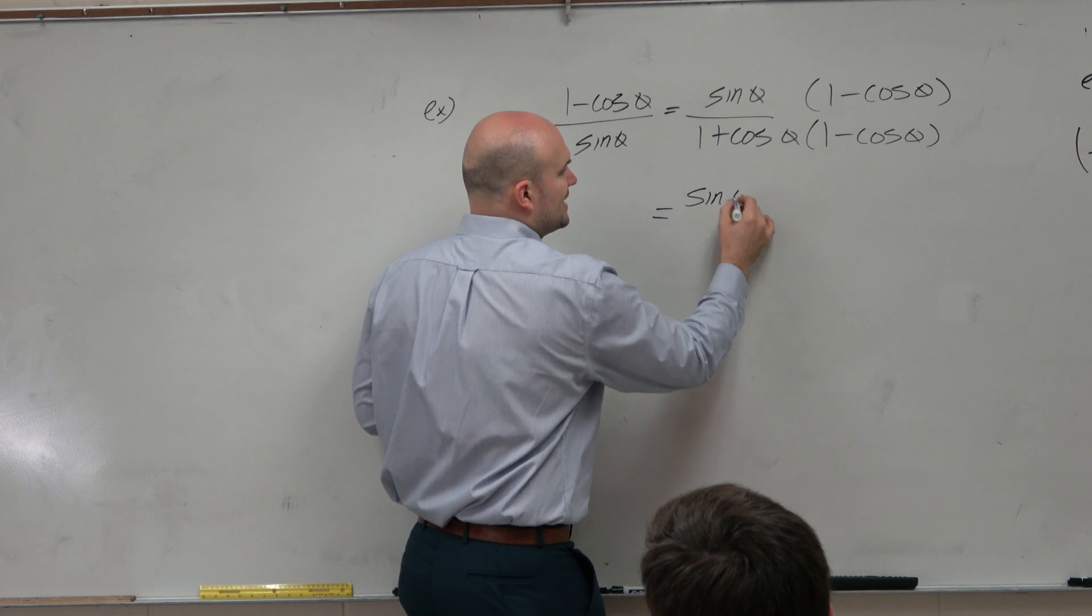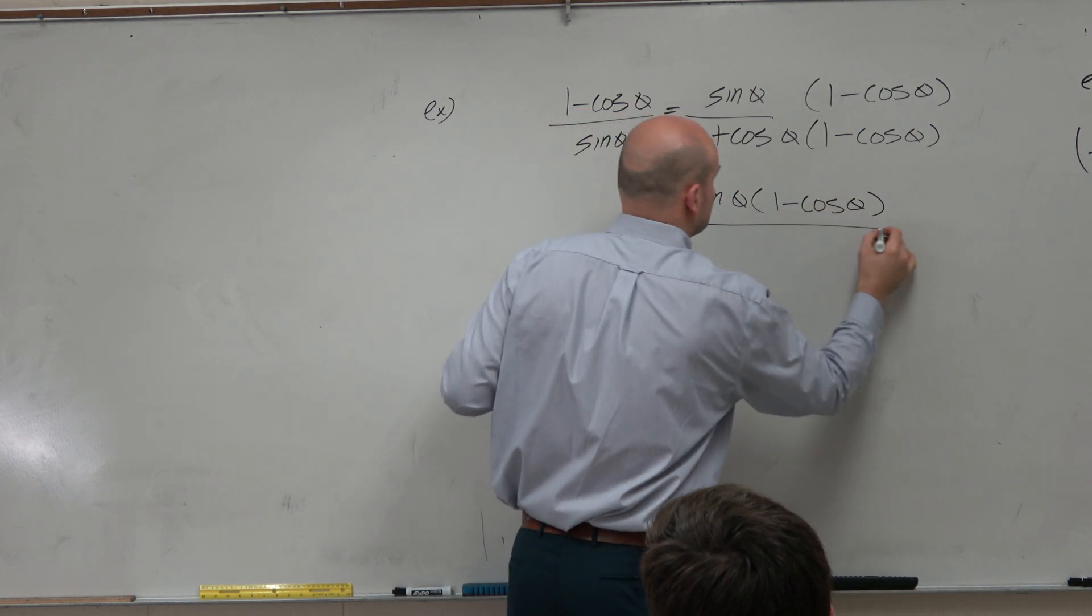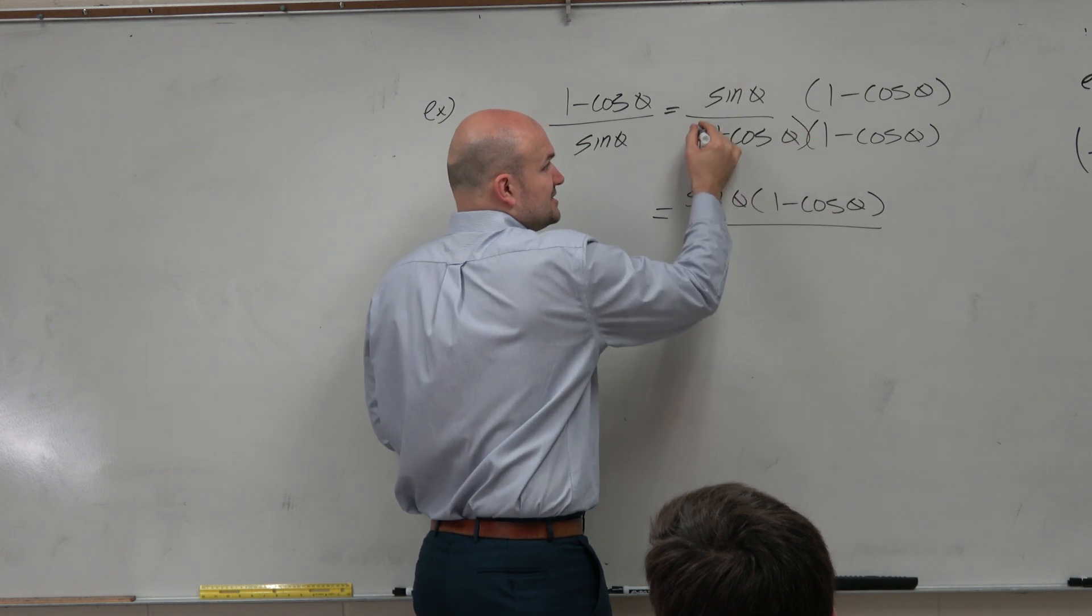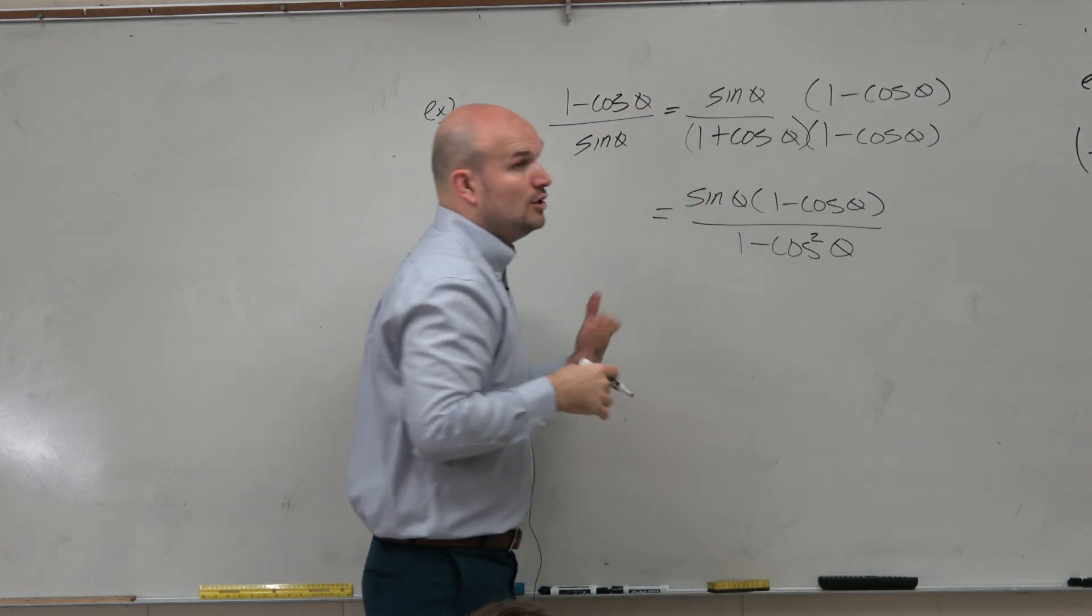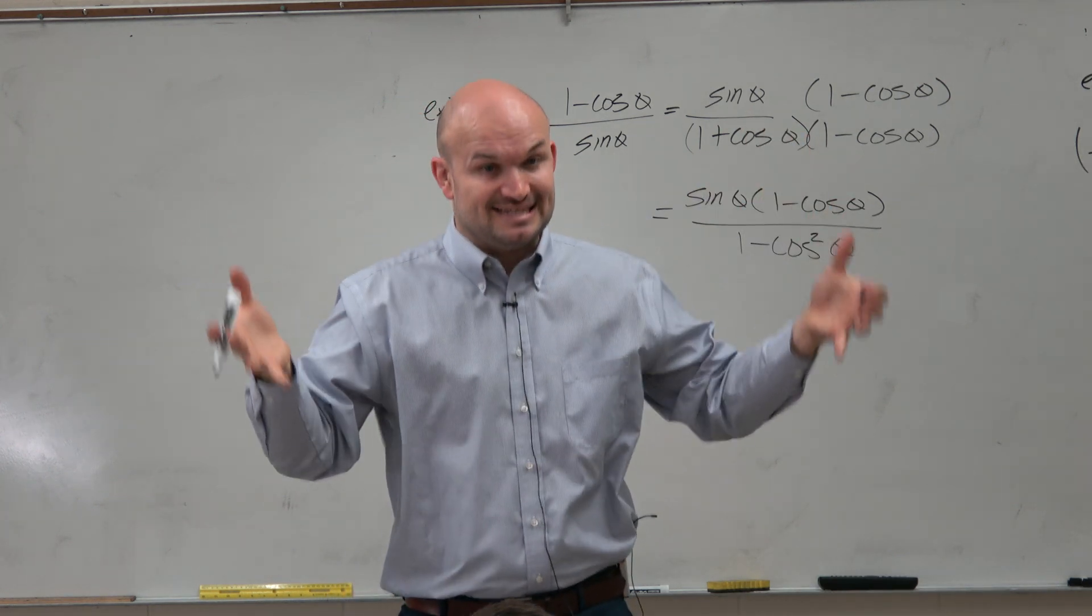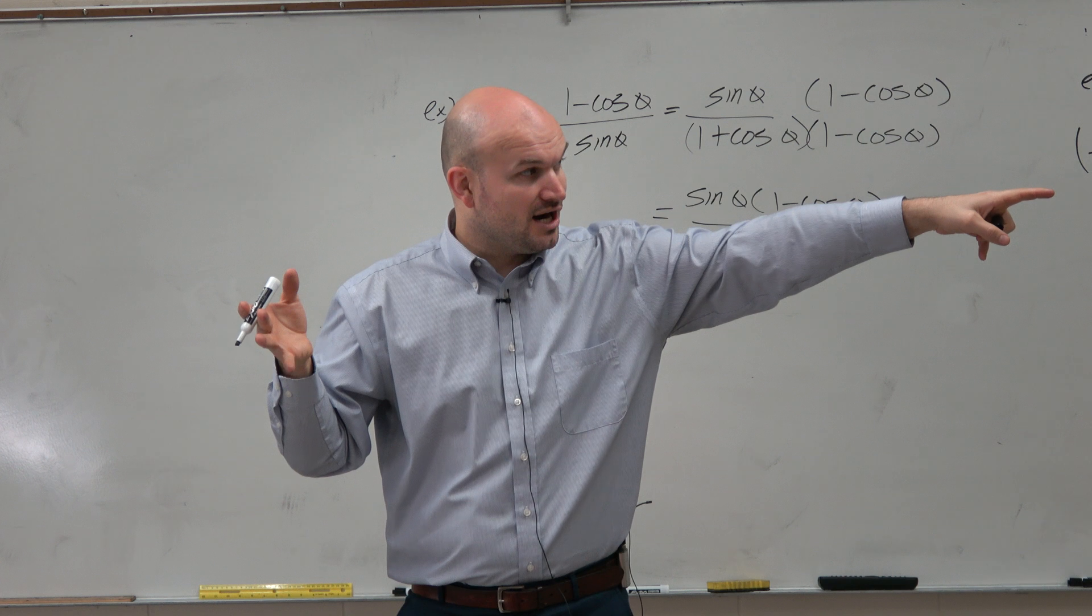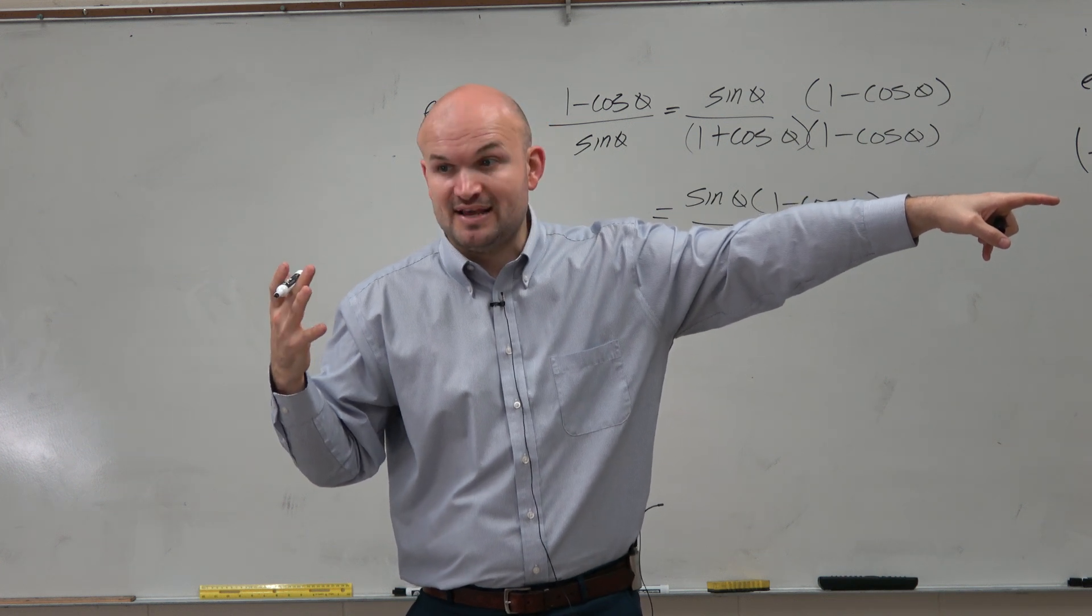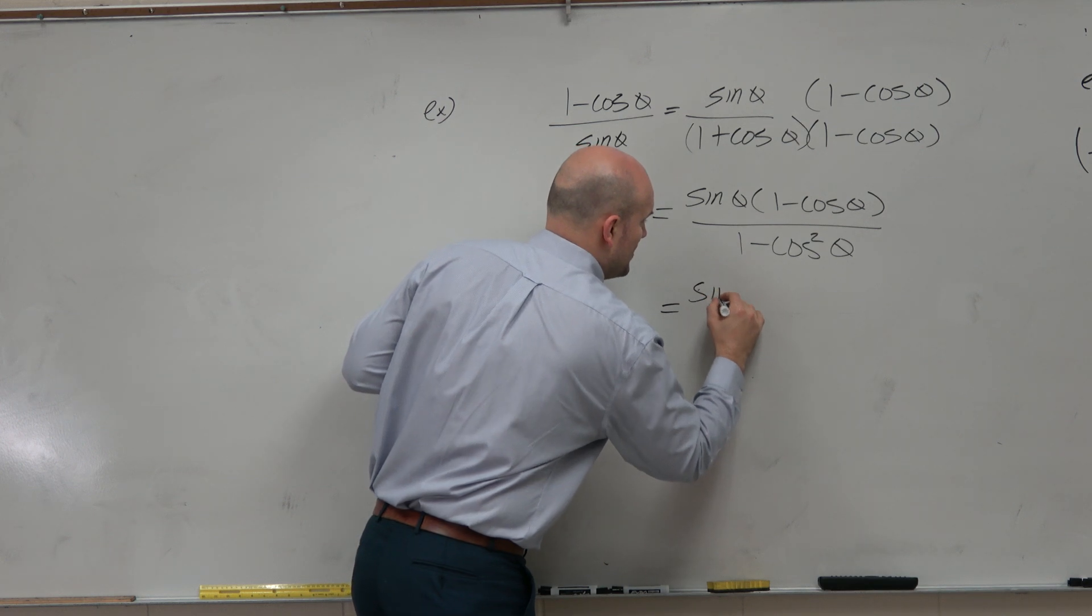This turns into sine of theta times 1 minus cosine of theta. This turns into 1 minus cosine squared of theta, which we now have created a Pythagorean relationship. Based on our identity, 1 minus cosine squared of theta is equal to sine squared of theta.